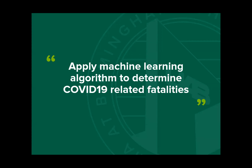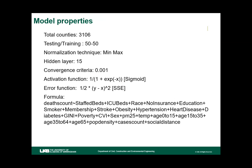Now let's talk about how we applied machine learning to predict COVID-19 related deaths in the United States. Overall, we had more than 3,000 counties and divided our data 50/50 between training and testing. Normalization was min-max. We tried different numbers of hidden layers based on computation time and capacity, and found that 15 hidden layers gave the highest accuracy. Other criteria included convergence criteria, activation functions, and error functions. The final formula used to predict deaths given the other factors is also presented.